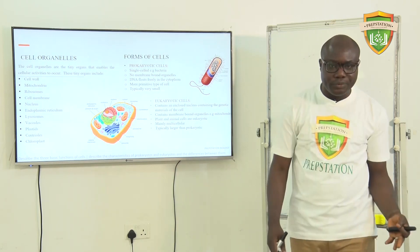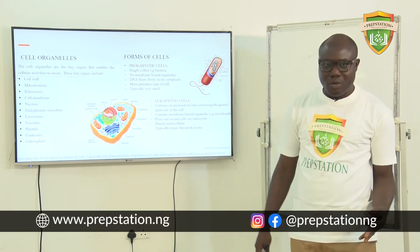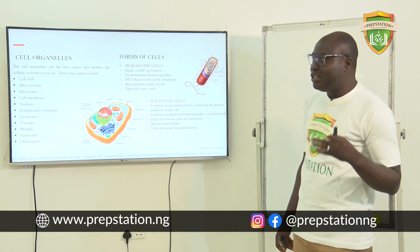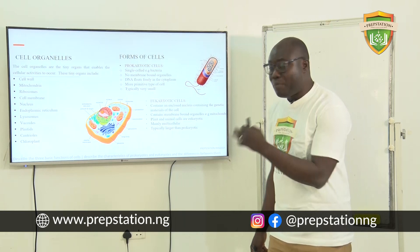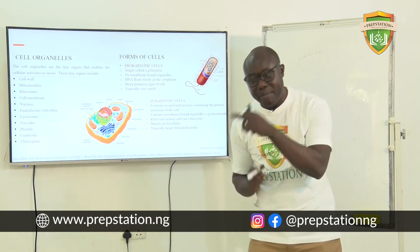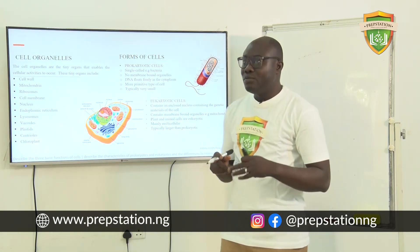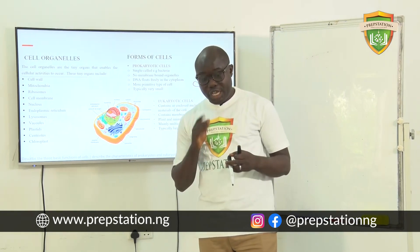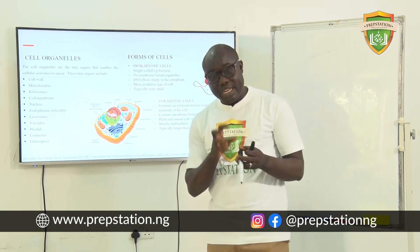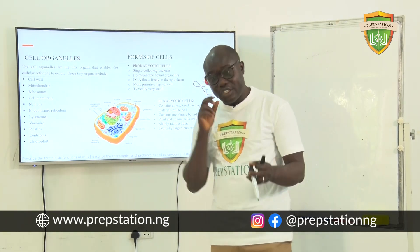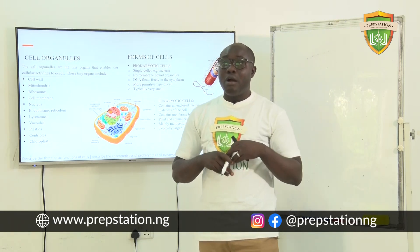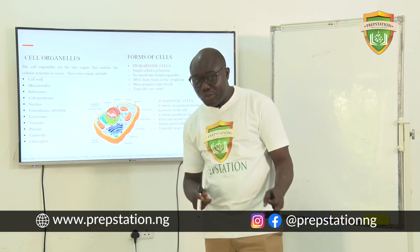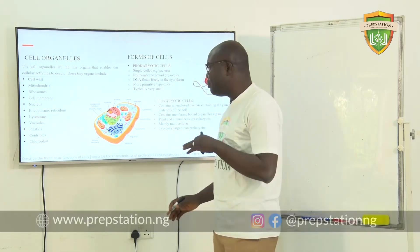These tiny organs include the cell wall — every cell must have a cell wall. We also have mitochondria, which is often called the powerhouse of the cell, because it is in the mitochondria that cellular respiration takes place. It is when a cell respires that energy — ATP — is produced, which the cell then uses to drive all its other metabolic activities.